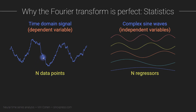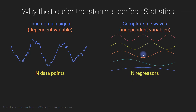Here's the thing. In the Fourier transform, we have N data points — the signal is N points long. And how many complex sine waves do we have? We have N of them. Half of them are the positive frequencies and half are the negative frequencies, but for this context that doesn't matter. We have N regressors, and they are all independent of each other. There is no redundancy — they are all separate from each other.